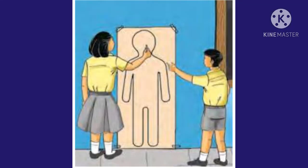Take a large sheet of thick paper about the height of a child in the class. Put it on the wall as shown in the picture and secure it with tapes. Ask one student to stand against it and another to draw the outline of the body.